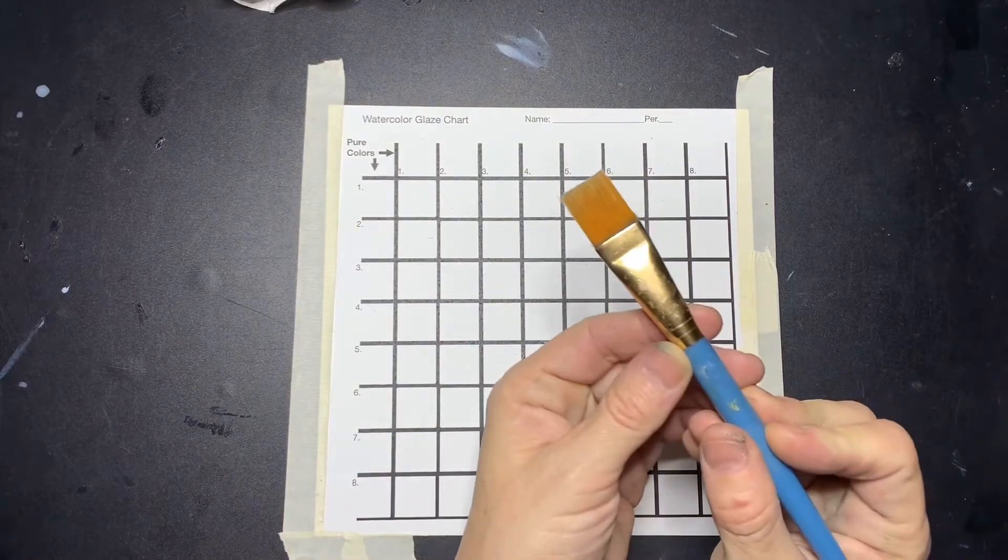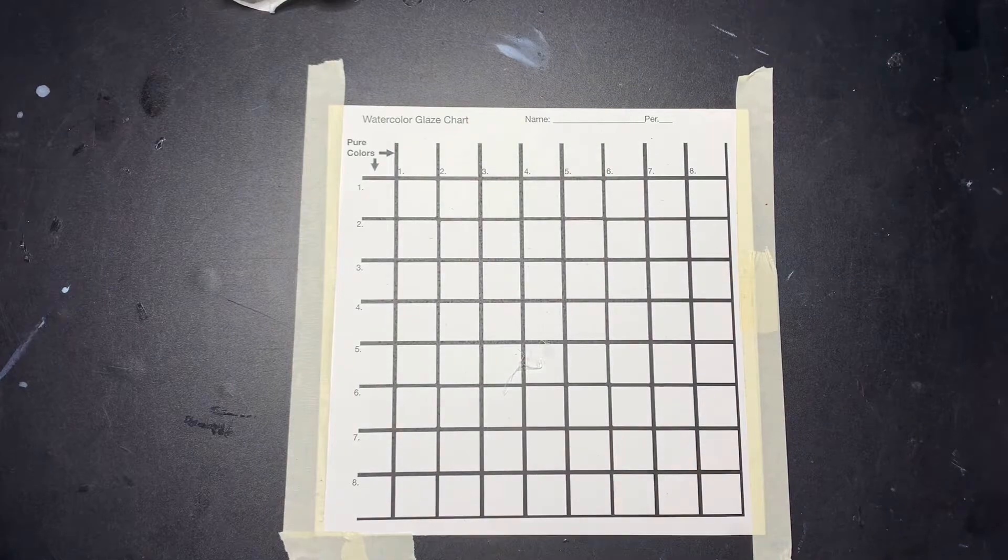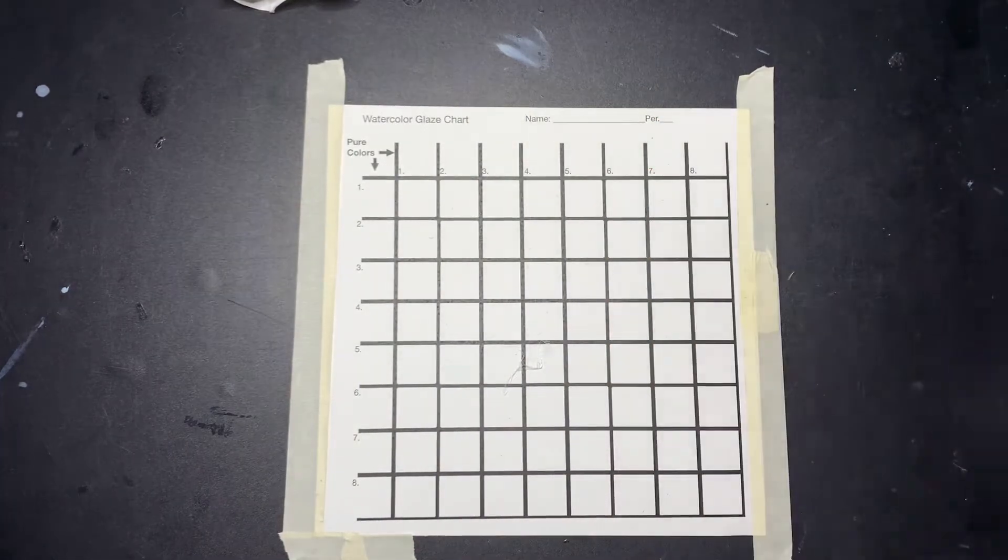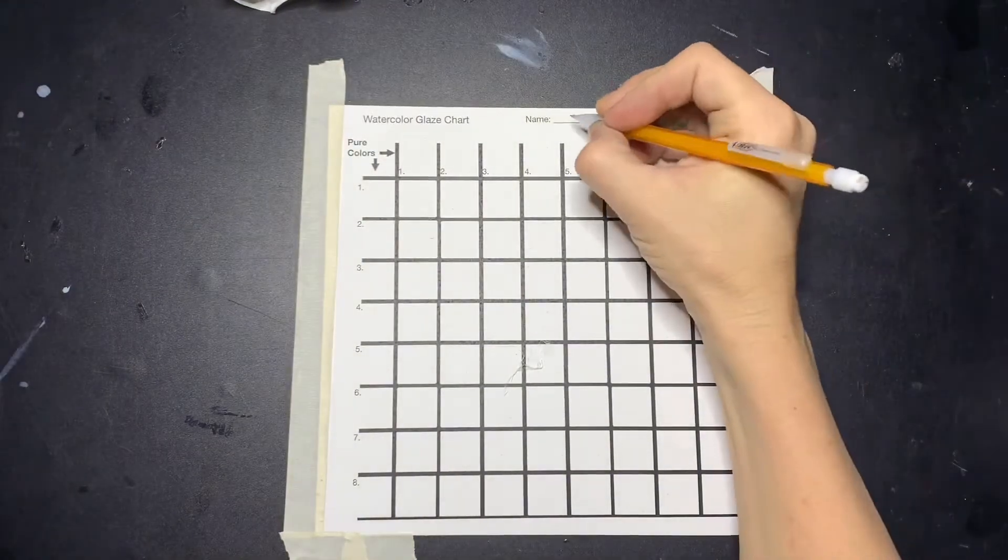You'll need the glaze chart paper, your brush (preferably a three-quarter inch flat brush), water, paper towel, your paint set, and a pencil.